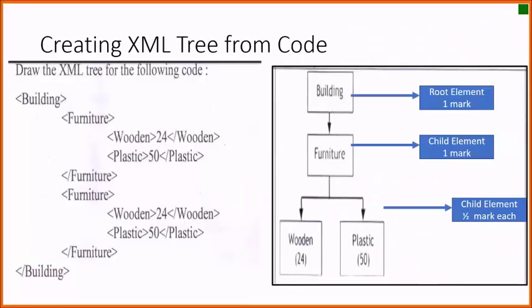This is the first question. You are given the XML code and you have to draw the XML tree. If you see here, there is one root element 'Building', then we have child element as 'Furniture', and further nested elements as 'Wooden' and 'Plastic'.